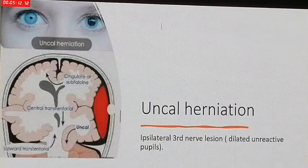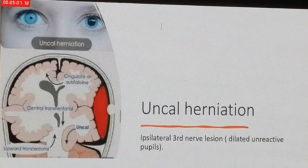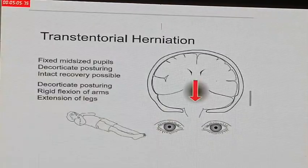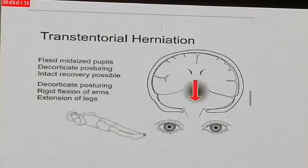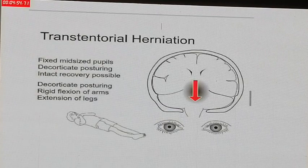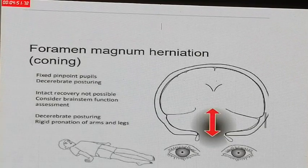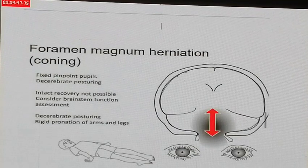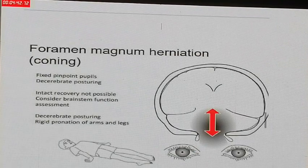Uncal herniation is associated with ipsilateral third cranial nerve involvement, with a dilated pupil unilaterally. Transtentorial herniation presents with fixed mid-sized pupils with decorticate posturing, and active recovery is possible at this stage. Decorticate posturing involves flexion of arms and extension of legs. The following stage of herniation shows pinpoint pupils, decerebrate posturing, and active recovery is not possible, with loss of brainstem function. Decerebrate posturing involves extension and pronation of both arms and legs.